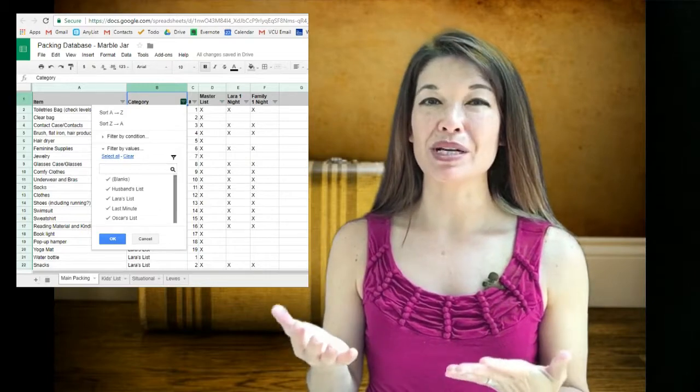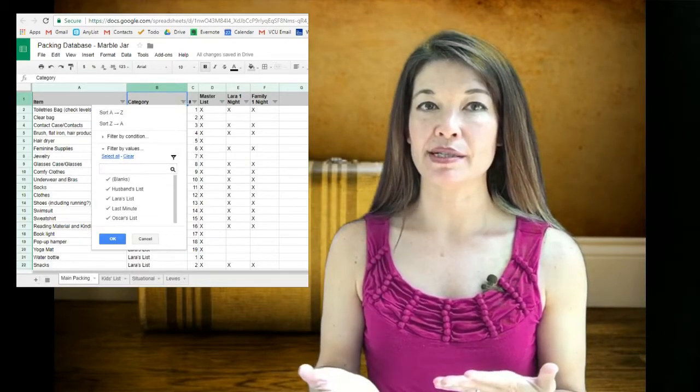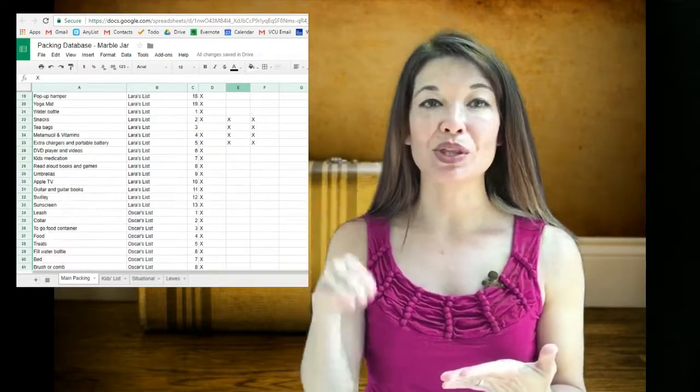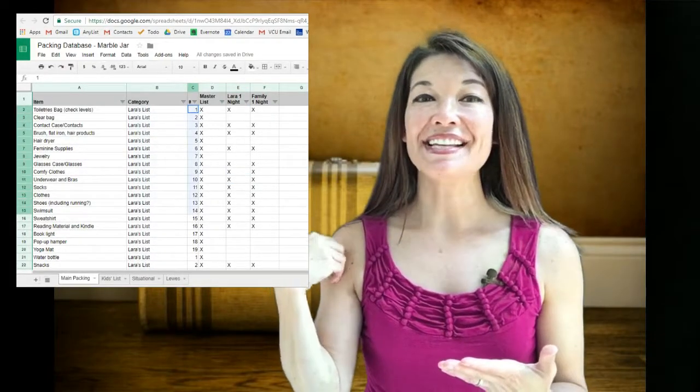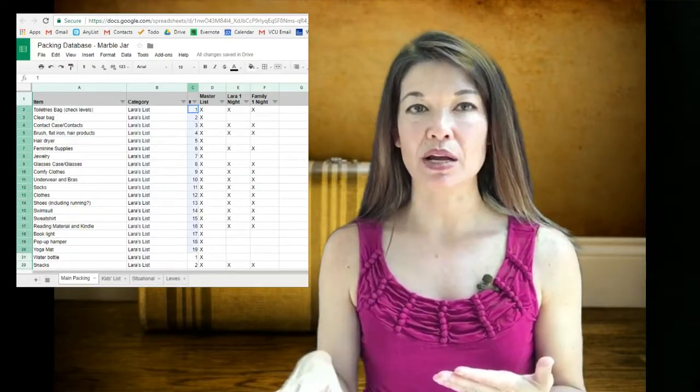So these were the groupings that I wanted to see on my packing sheet and then I ordered them manually within those categories based on packing convenience and assigned them numbers so they wouldn't get sorted out of order.